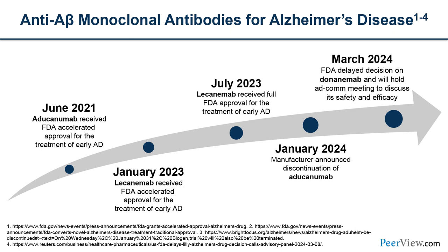Regarding disease modifying therapies: in June 2021, aducanumab received accelerated FDA approval for early Alzheimer's disease. In January 2023, lecanemab received FDA accelerated approval, followed by full approval in July 2023. In January 2024, the manufacturer announced discontinuation of aducanumab, leaving lecanemab as the only currently available option. A decision on donanemab is expected in the second quarter of 2024.